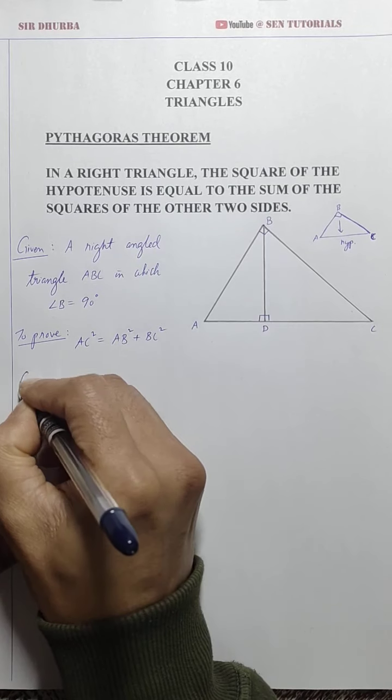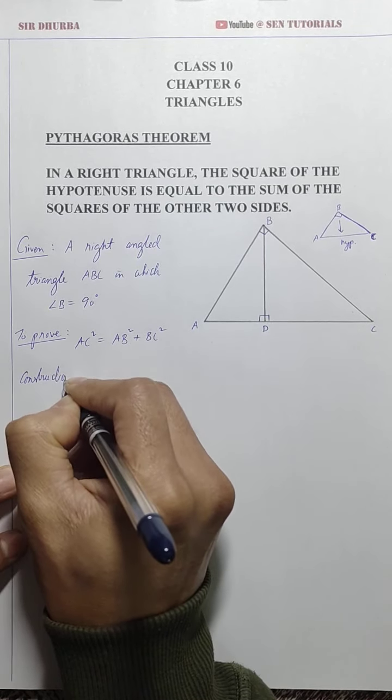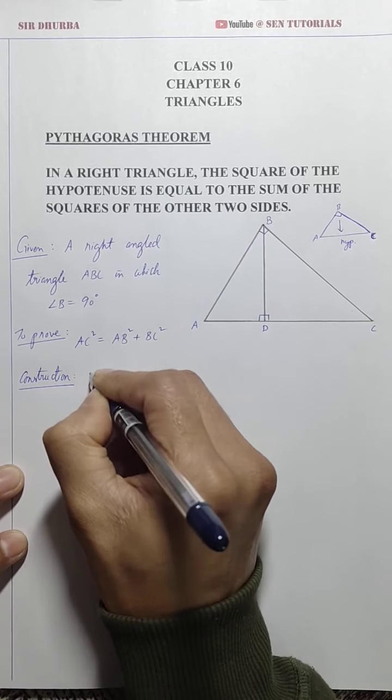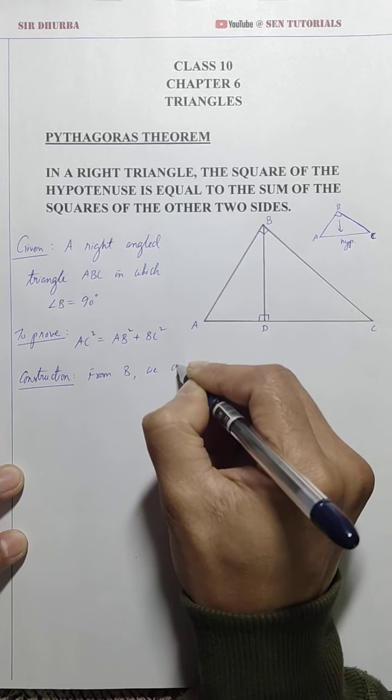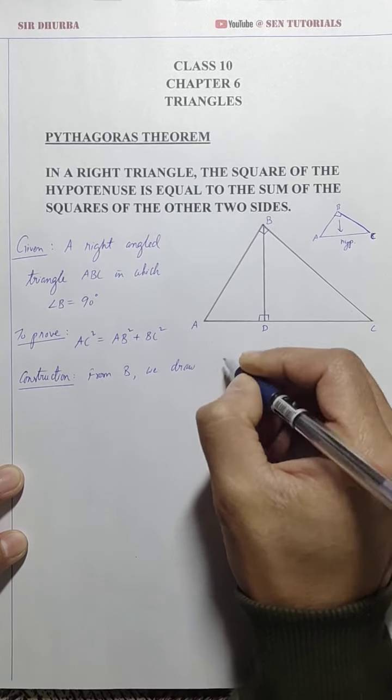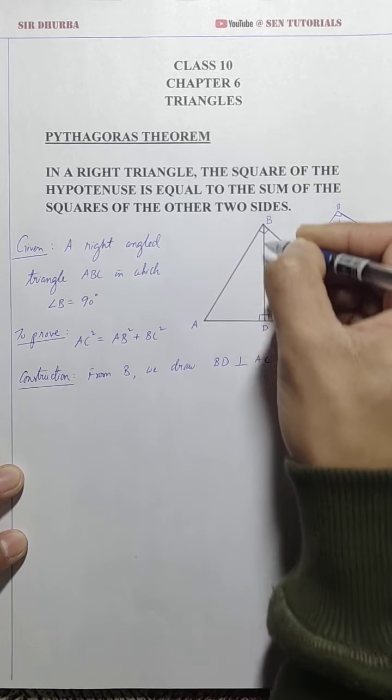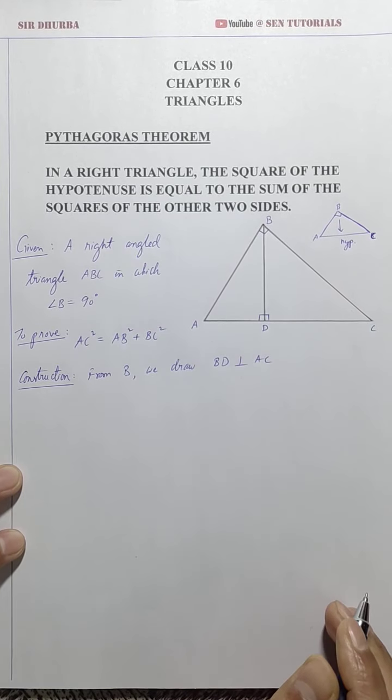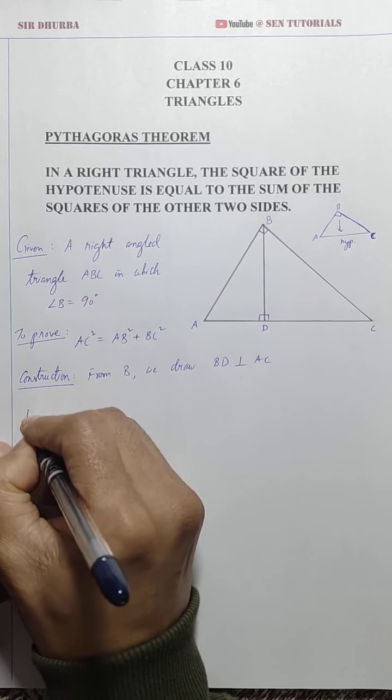So, initially what we have is, we have a triangle like this, where this is 90 degree. So, opposite to 90 degree is the hypotenuse. So, the square of the hypotenuse should be equal to sum of the squares of the other two sides. All right. So, of construction, what we will do here is, from the point B, what we will do is, we draw BD perpendicular to, we drop this BD, that will be perpendicular to AC. Okay now. All right. Proof.